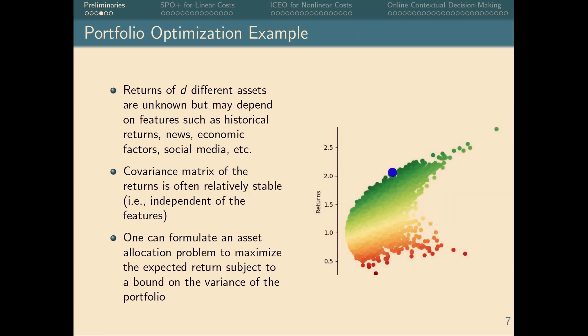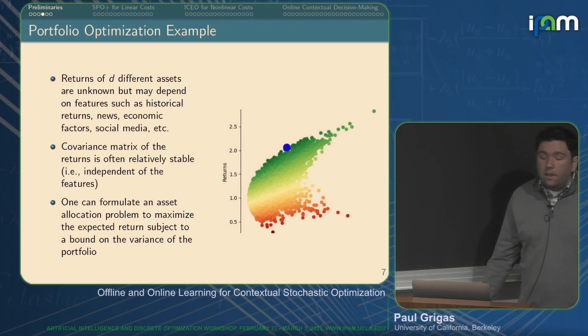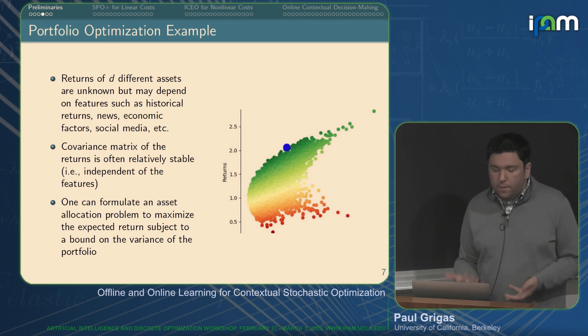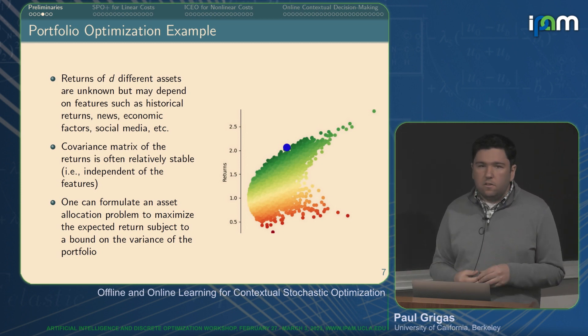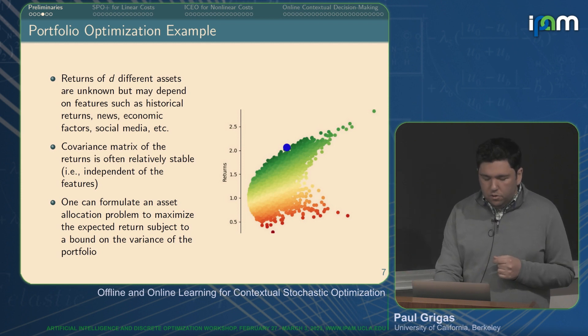Another example is in finance — we may be trying to build a portfolio of different assets. The returns are unknown and stochastic but might be predictable based on historical returns, news, and economic factors. We can think about an asset allocation problem that tries to maximize expected return subject to a bound on the variance of the portfolio, and try to predict these expected returns based on features.